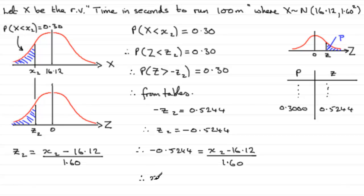you therefore have X2 equals 16.12 minus 1.60 multiplied by 0.5244. And that comes to a value of 15.28096 and so on.